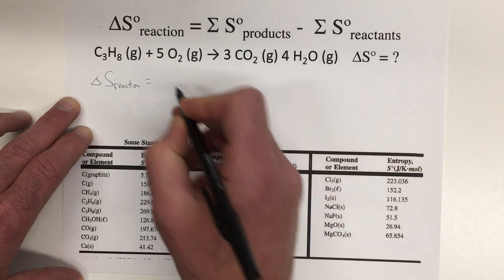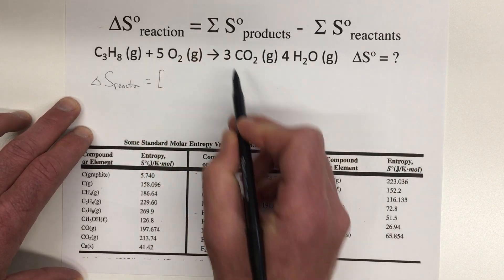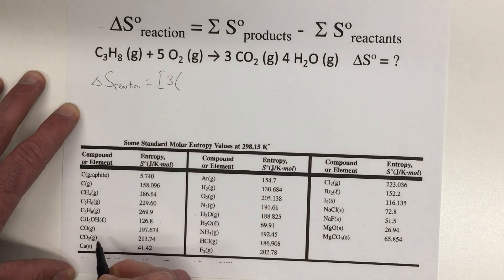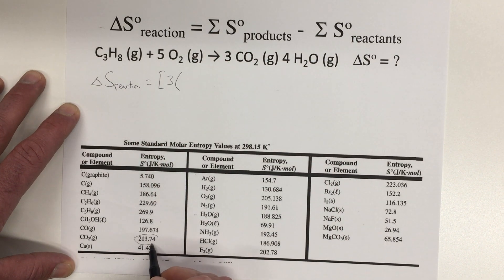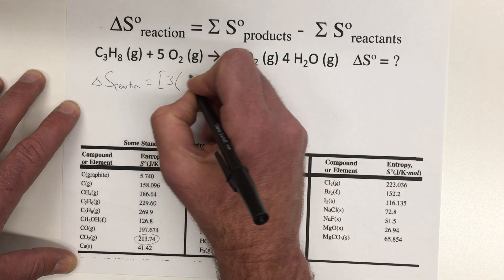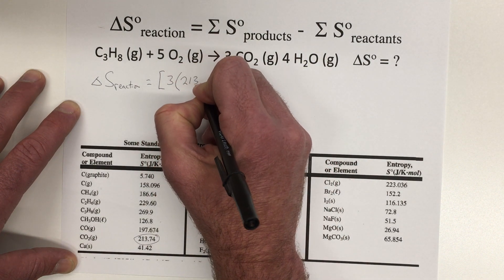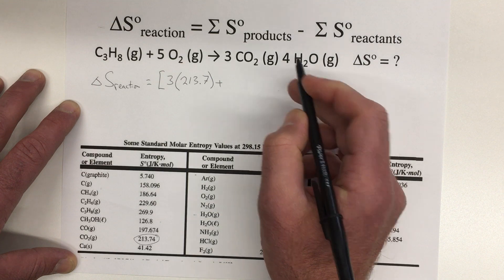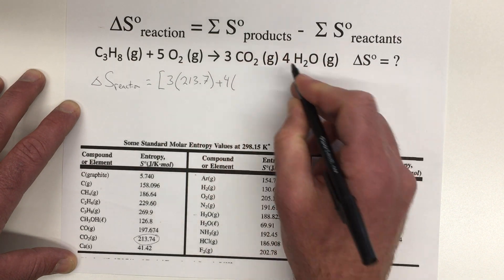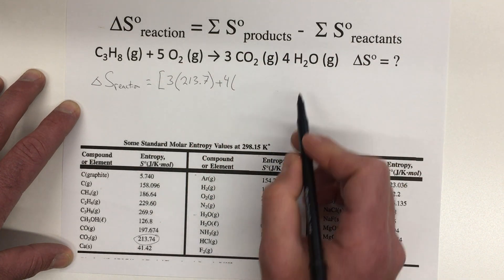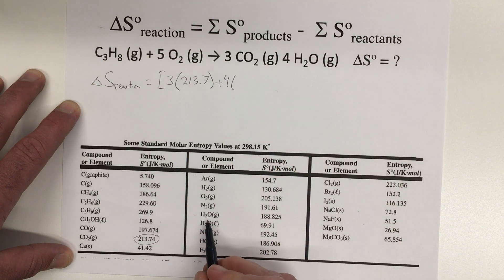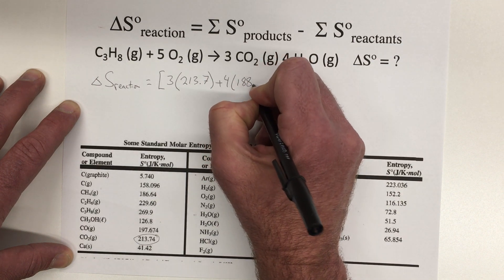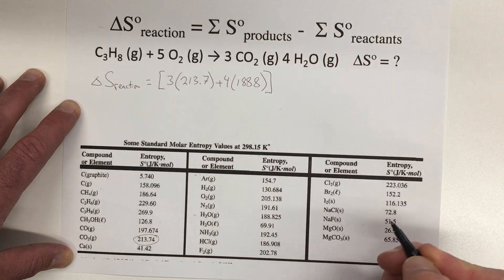And so we'll take the delta S of the reaction. It'll be equal to the sum of all of our products. So our products are three moles of carbon dioxide, so we'll go three times the value for carbon dioxide. Carbon dioxide is right here, 213.7. Plus our other product is four moles of water. So the water, we've got to make sure with the water that we're looking for the one that's a gas. That will make a big difference. So the gas is 188.8.